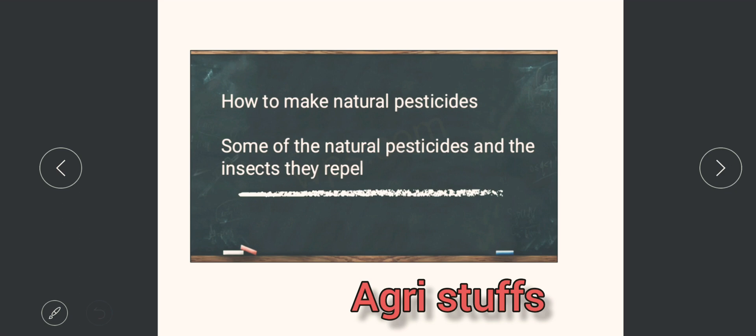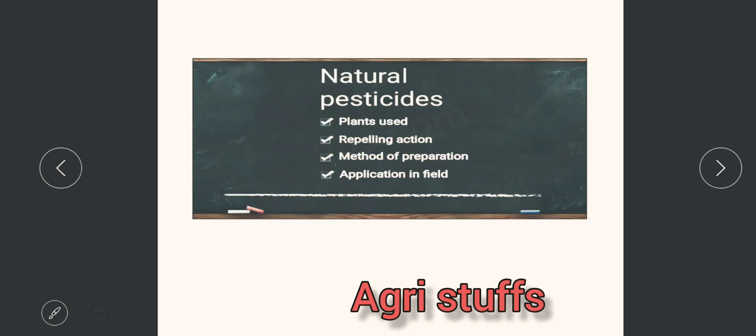the Union Ministry of Agriculture has banned 27 pesticides which includes Carbofuran, Monocrotophos, and other mostly used pesticides. So now the farmers are in problem to face the pest control.